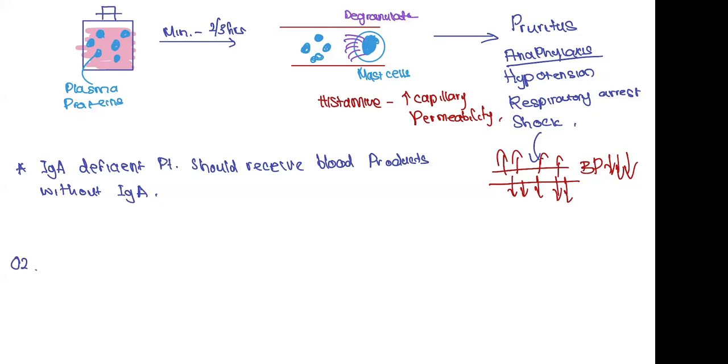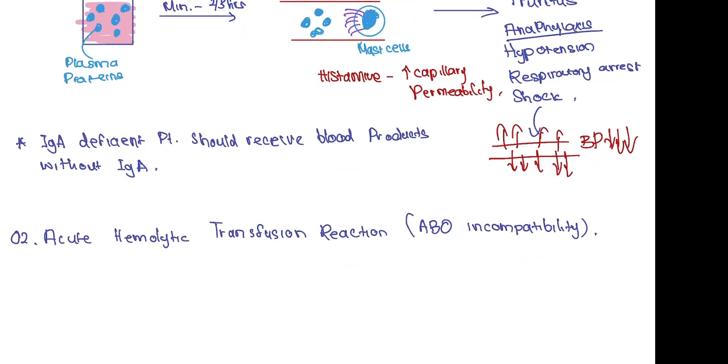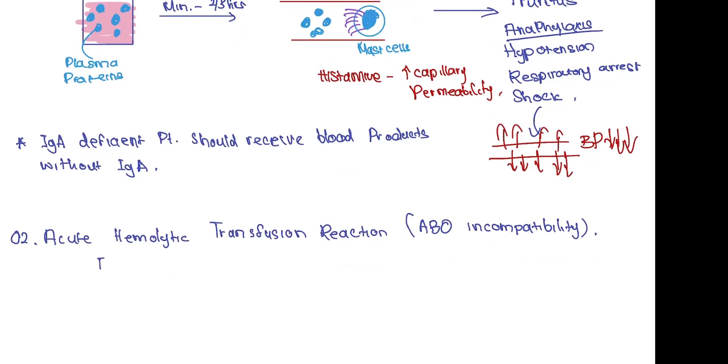The next reaction is an acute hemolytic transfusion reaction. This is basically the ABO incompatibility. So if you give the wrong blood group, what is going to happen? And this is a type 2 hypersensitivity reaction.